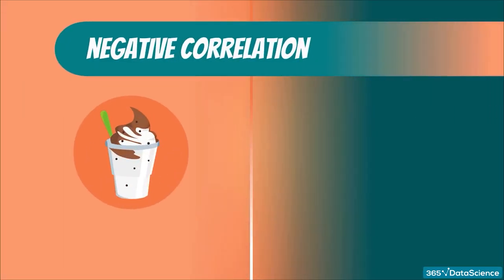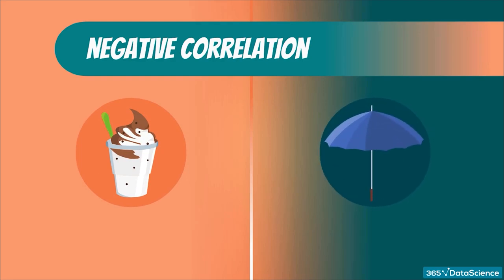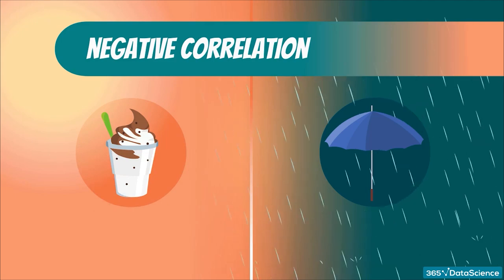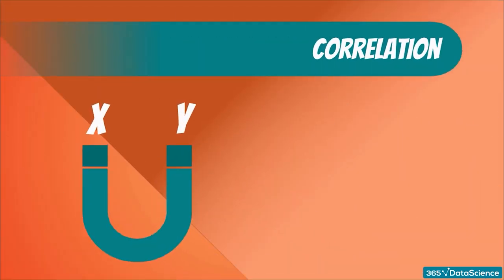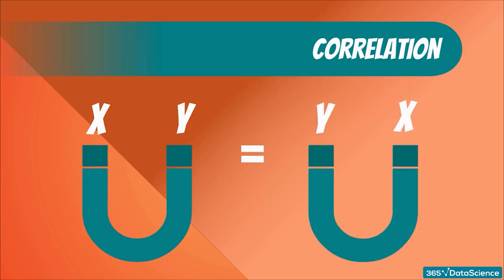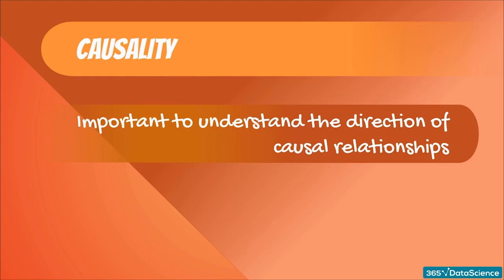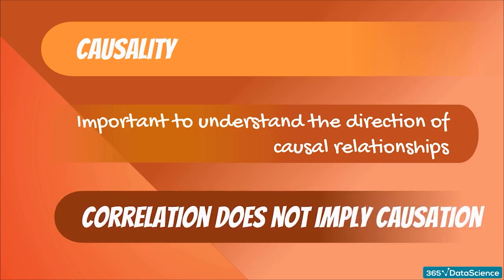Before we continue, we must note that the correlation between two variables x and y is the same as the correlation between y and x. The formula is completely symmetrical with respect to both variables. This leads us to causality. It is very important for any analyst or researcher to understand the direction of causal relationships. In the housing business, size causes the price, and not vice versa. We will explore this topic in much more detail in the regression analysis section. For now, it is only needed that you realize that correlation does not imply causation.